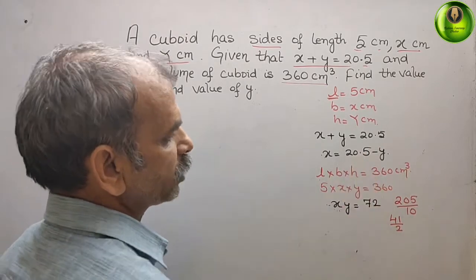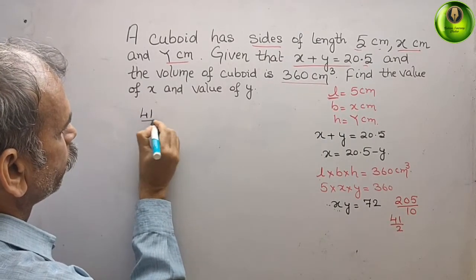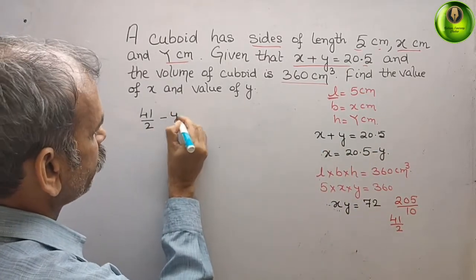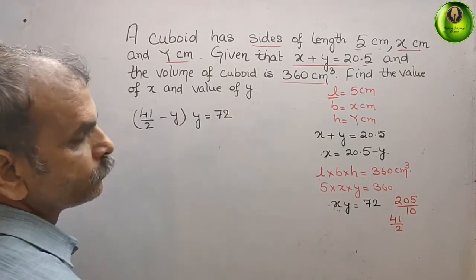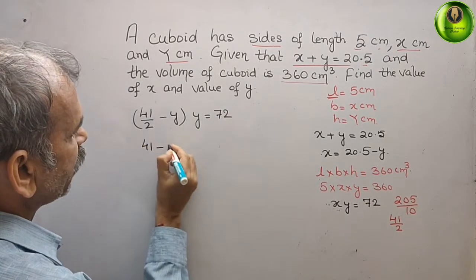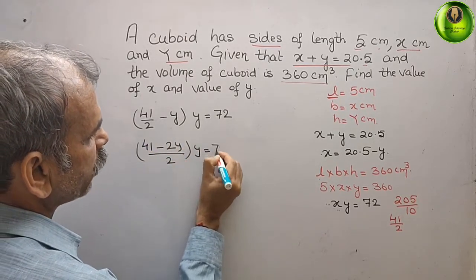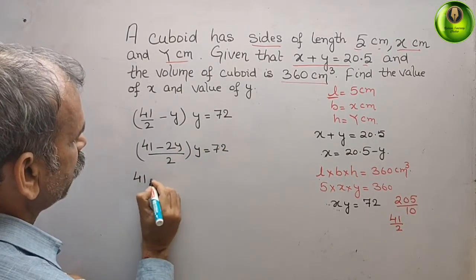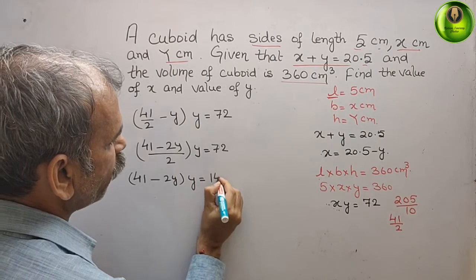Now substitute this. We get (41/2 minus y) times y equals 72. Taking the LCM: (41 minus 2y) divided by 2, times y, equals 72. Cross multiplying gives us 41 minus 2y times y equals 144.